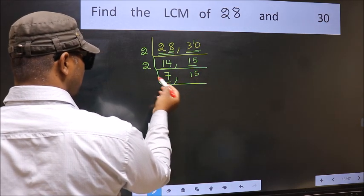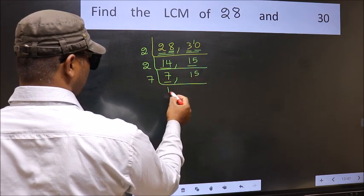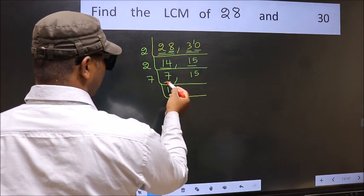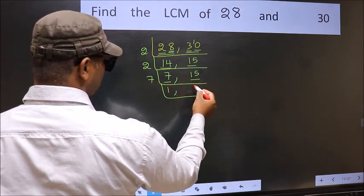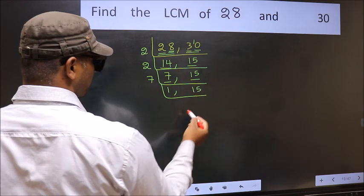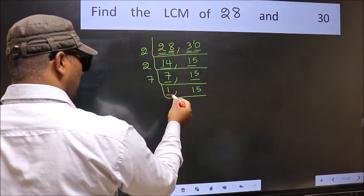Now here we have 7, 7 is a prime number, so 7, 1's 7. The other number 15, not divisible by 7, so we write it down as it is. Now we got 1 here.